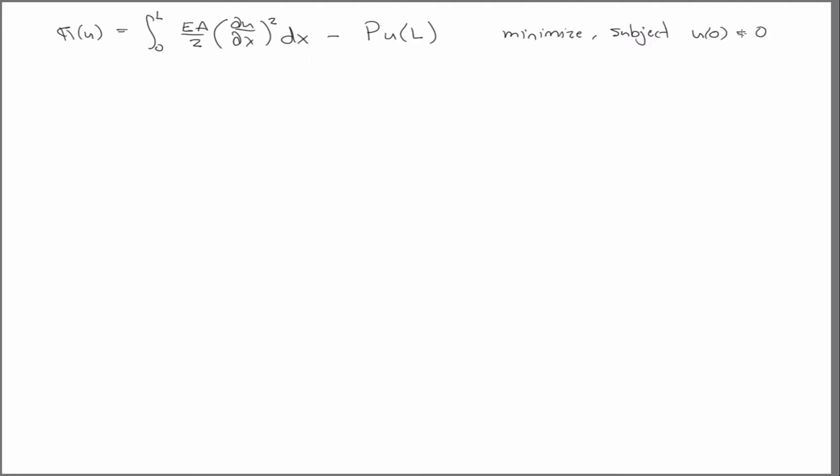We want to minimize an integral. Last time we showed that a functional has a stationary value or minimum when its first variation equals zero.